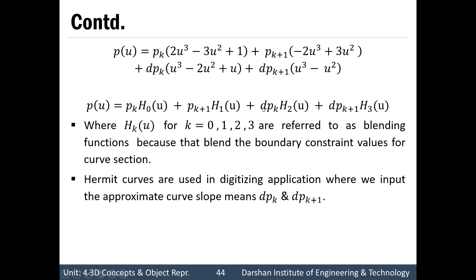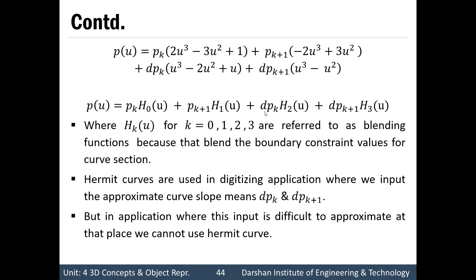Hermit curves are used in digitizing applications where approximate curve slopes — that is, dpk and dpk+1 — need to be specified as input at each control point. Thank you for watching. Have a nice day.